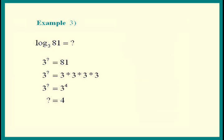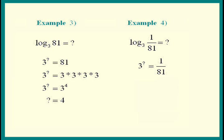Example 4 is very similar to example 3, except we have 1 over 81. We saw how 81 is 3 to the 4th. 1 over 3 to the 4th is 3 to the negative 4 power. Matching up the powers, the answer is negative 4.